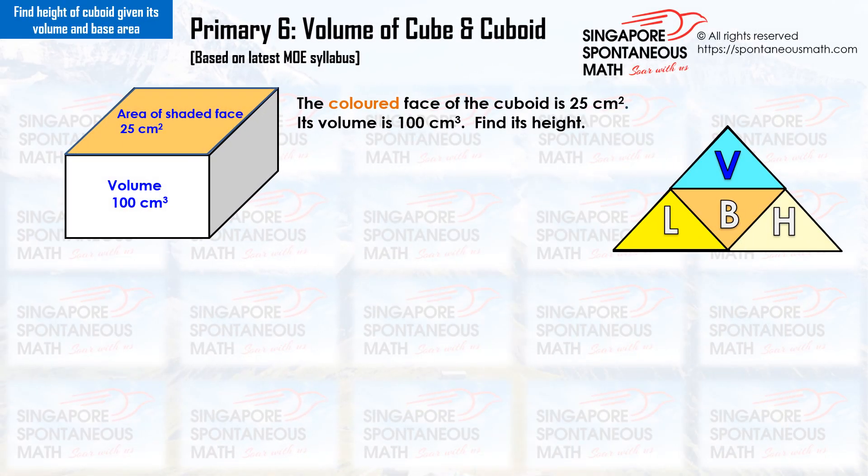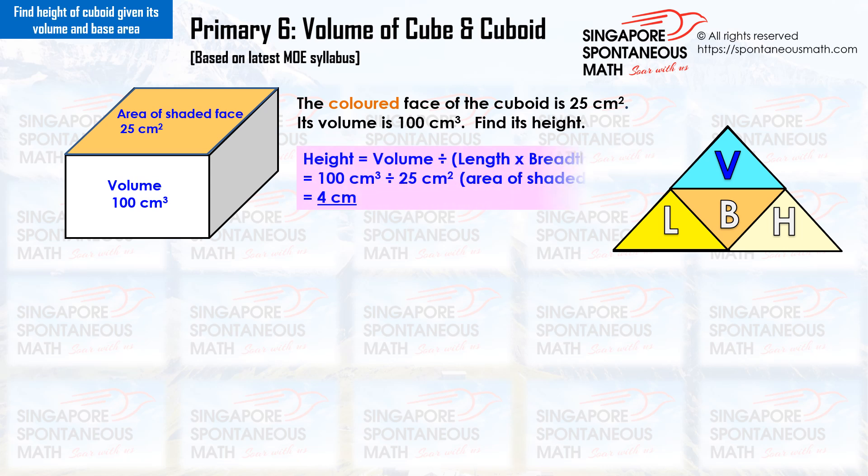The colored face of the cuboid is 25 cm². Its volume is 100 cm³. Find its height. To find the height, we take the volume divided by the area of the shaded face: 100 divided by 25 equals 4. The height of the cuboid is 4 cm.